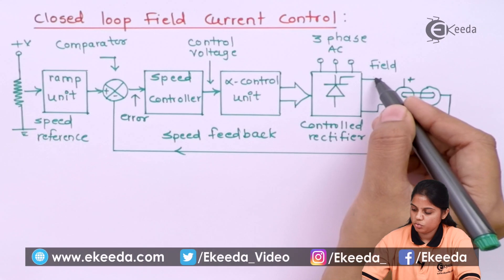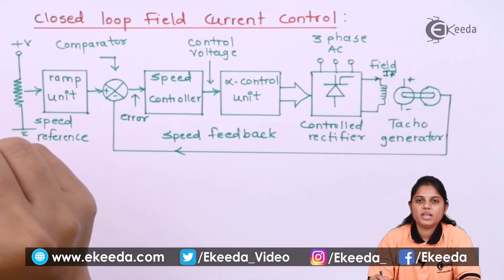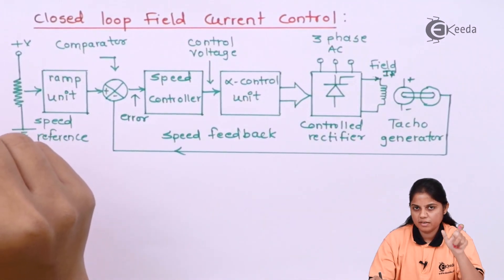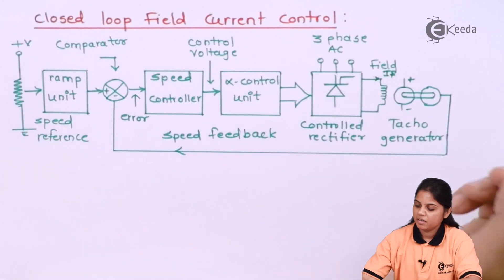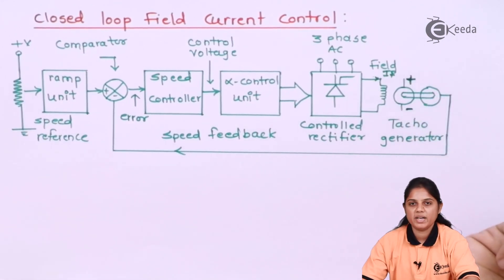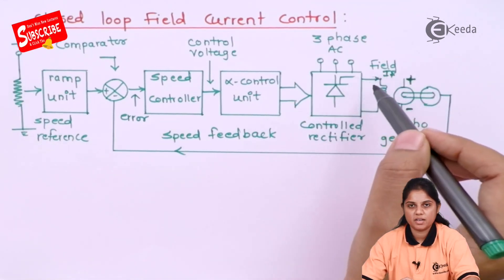So here we are going to vary the field current IF. Previously we kept field current constant by giving constant DC voltage to the field terminals. But here we are providing constant DC voltage to the armature winding, so that armature voltage will be constant and you can change the field current.